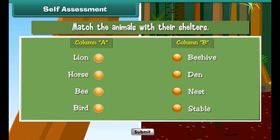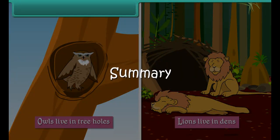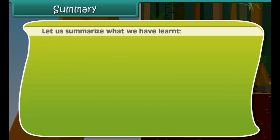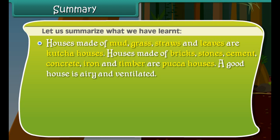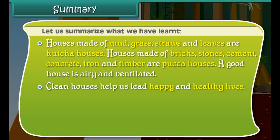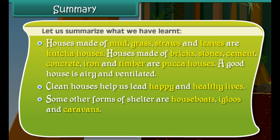In summary: houses made of mud, grass, straws and leaves are kacha houses; houses made of bricks, stones, cement, concrete, iron and timber are pakka houses. A good house is airy and ventilated, and clean houses help us lead happy and healthy lives. Other forms of shelter include houseboats, igloos and caravans. Animals also live in shelters such as kennels, stables, sheds, and dens.